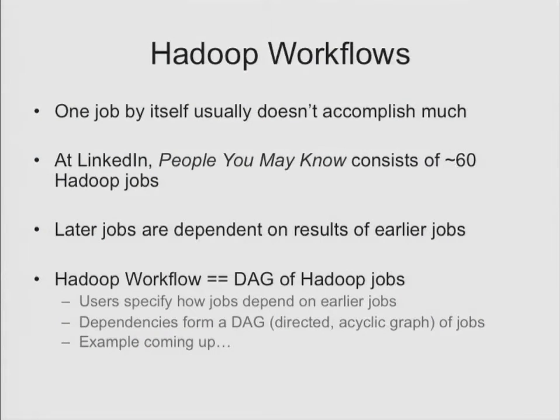If you write a Hadoop job, generally a single job doesn't do all that much — it does some discrete processing and writes back a result to HDFS. People You May Know takes many Hadoop jobs to compute — looking through all the things you've done on LinkedIn to figure out who else you might know that you're not yet connected with. Later jobs are dependent on earlier jobs. Let's call that a Hadoop workflow: you string together these jobs and declare how later jobs depend on earlier ones. This forms a DAG of jobs — a directed acyclic graph.